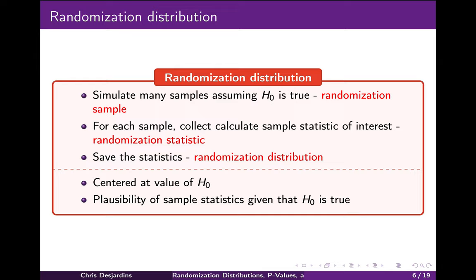A bootstrap distribution is used to understand how sample statistics vary randomly from sample to sample. We used a bootstrap distribution to simulate the sampling distribution and estimate the standard error. It would be great if we could apply this logic to estimate how much a statistic varies from sample to sample if the null hypothesis is true. This is what a randomization distribution enables us to do. To create one, we simulate at least 10,000 samples assuming the null hypothesis is true, calculate the statistic of interest for each sample, and save these statistics to create the distribution. A randomization distribution is centered at the null hypothesis value.